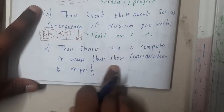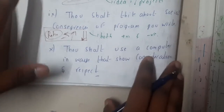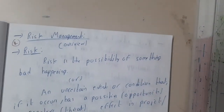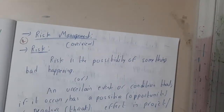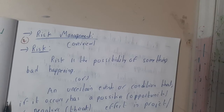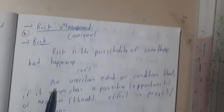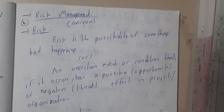The tenth commandment: use a computer in a way that is considerate and respectful — give respect to others' data and do not access it without permission. I hope everyone got a basic idea about computer ethics. In the next lecture we'll be starting the concept of risk management with an introduction. Thank you, thanks for watching.